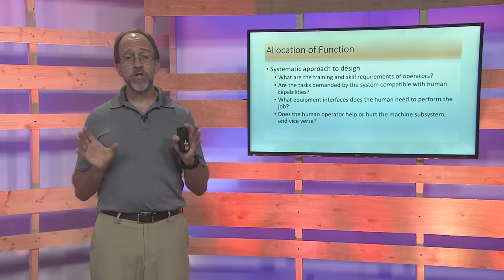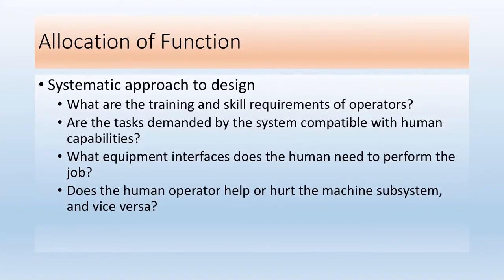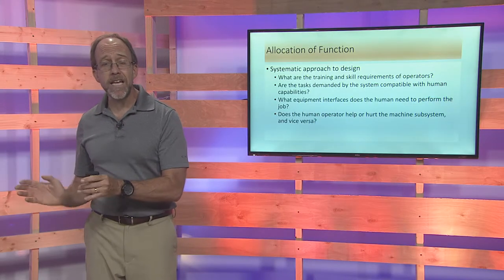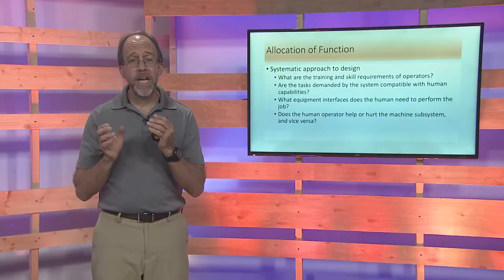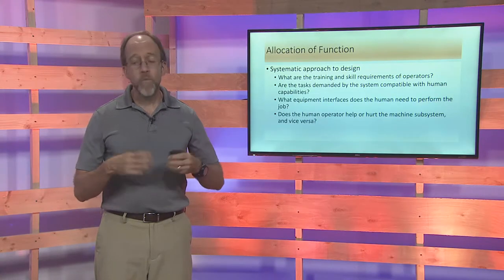Allocation of function requires a full systematic approach. You look at the machine system, the human system, the advantages of each, the interface constraints, and financial constraints. You ask: if we allocate this function from the user to the machine, what does the machine have to be capable of? If we allocate it to the user, what does the user have to do, and what else will they be doing? It is a full systematic process, not random or haphazard.